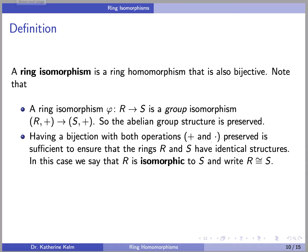A ring isomorphism is a ring homomorphism that is also bijective. Note that a ring isomorphism phi from R to S is a group isomorphism on the underlying abelian groups, so the abelian group structure is preserved. But in fact, having a bijection with both operations preserved is sufficient to ensure that the rings R and S have identical structures as rings. In this case, we say that R is isomorphic to S, using the same notation as for groups.